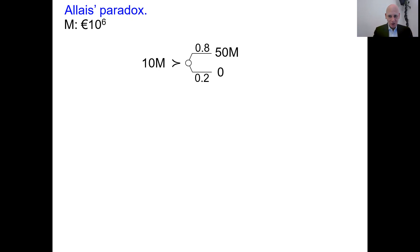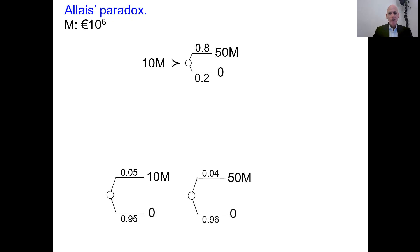Now I present another choice situation at the bottom, where smaller probabilities are involved. The left option gives you a 0.05 probability of 10 million, or in the right option, a 0.05 probability of 50 million. Again, make up your mind what you prefer, pause the video, and when you're done, come back.